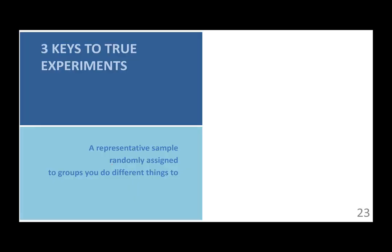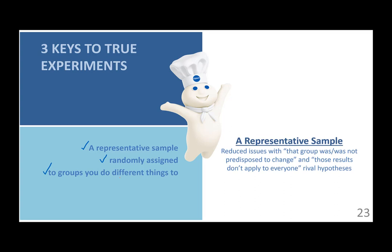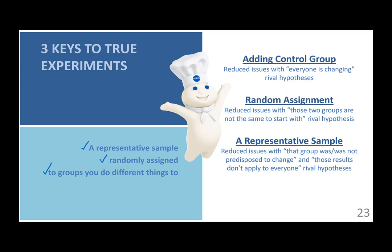To summarize, we have three keys to true experiments: a representative sample, randomly assigned to groups you do different things to. Which brings us back to our good friend the Pillsbury Doughboy — we want to see if poking him causes giggling. First, we get a representative sample of Pillsbury Doughboys. Second, we add a control group — some that get the poke and some that don't. Finally, we randomly assign them to either the control group or the group that gets the poke. With these three elements — a representative sample, random assignment to a control group and a treatment group — you're on your way to having experiments that can actually show causal connections between the changes you're making and the impacts you're seeing.